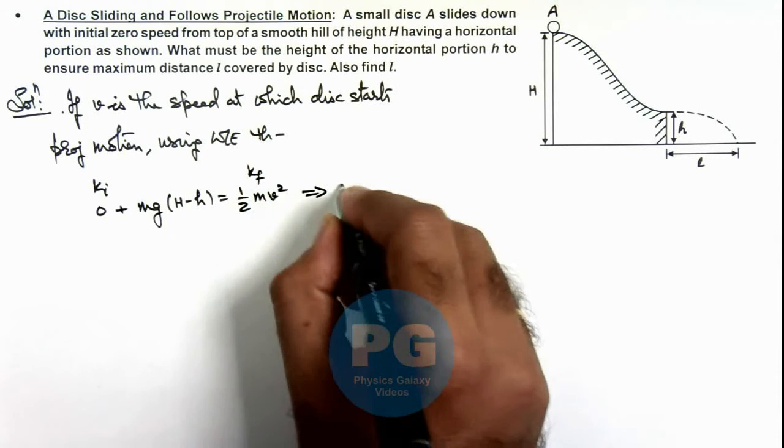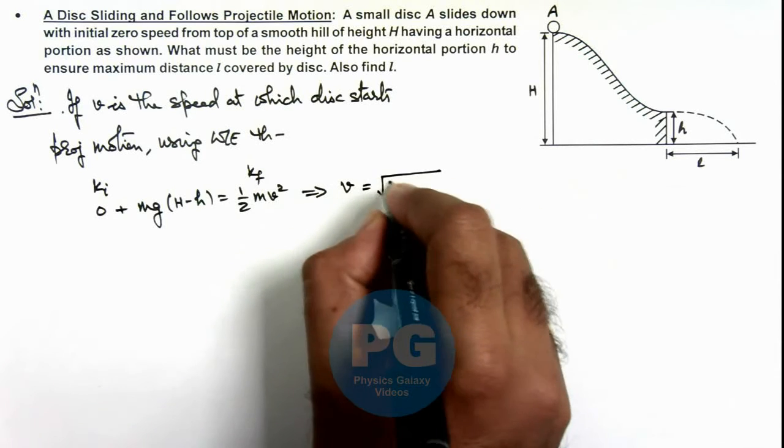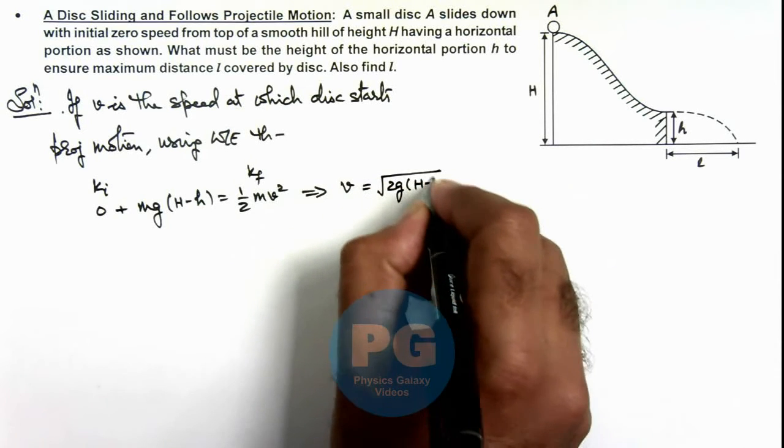Which will give us the speed with which the disc will be projected out, that is root of 2g(H minus small h).